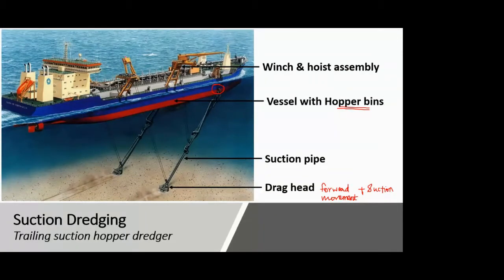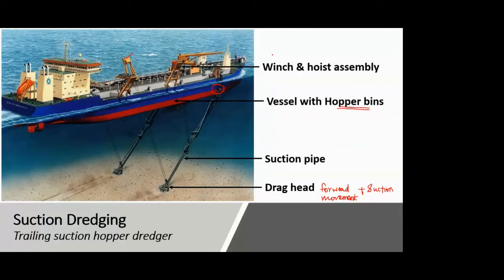The yellow-color extensions visible on the top side are the winch and hoist assembly. The suction pipe and drag head are not permanently below the water — they are generally above the water surface when not in use. When you have to use them, you lower them to the bed of the water body. The lowering and upward movement of the drag head and suction pipe together is done by this winch and hoist assembly. A hoist is an arrangement which can lift particular objects, so the combination allows you to lower and raise the assembly.